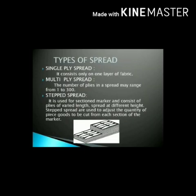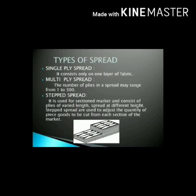Single ply spread consists of only one layer of fabric. Multiply spread: the number of plies in a spread may range from one to three hundred. Ply means a single layer of fabric; plies means several layers of fabric. Stepped spread is used for section markers and consists of plies of variant length spread at different heights. Step spread is used to adjust the quantity of piece goods to be cut from each section of a marker. It consists of different lengths and different heights, and the garment pieces are designed to adjust quantity and mark different parts before cutting.